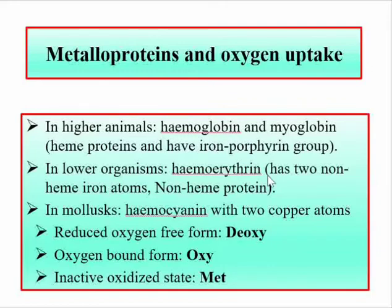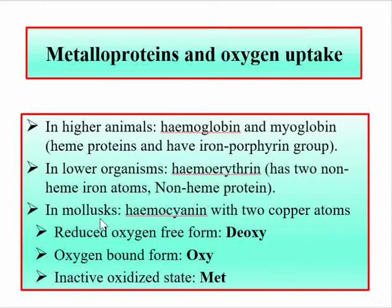Hemoerythrin is a non-heme protein found in lower organisms with two non-heme iron atoms, acting as an oxygen carrier. Hemocyanin has two copper atoms and acts as an oxygen carrier in mollusks. So these three oxygen carriers have different metal centers and different heme or non-heme protein types.